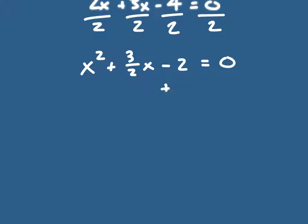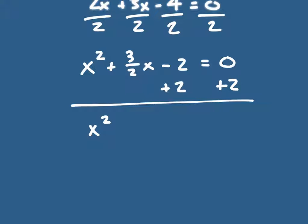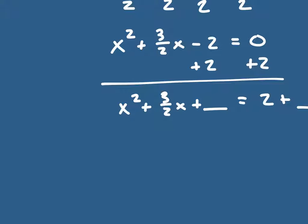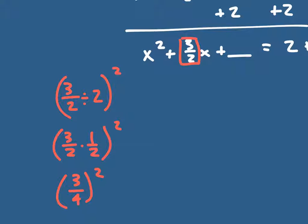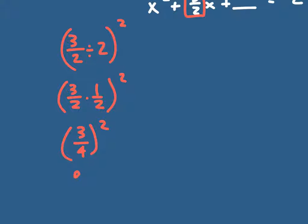I add 2 to both sides and get x squared plus three-halves x plus blank equals 2 plus blank. This one's a little different because I have a fraction as my middle term. I take three-halves, divide it by 2 — which is the same as multiplying by one-half — and square it. That gives me three-fourths squared, and squaring numerator and denominator gives nine-sixteenths.